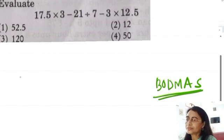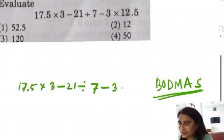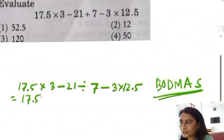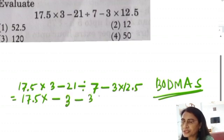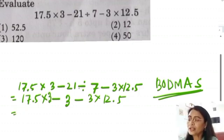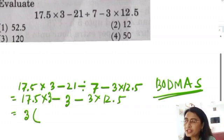Here I am writing the question. Division means 21 divided by 7. 7 times 3 is 21, minus 3 into 12.5. So here you see, all terms have 3. Here 3 into something, here 3 into 1, here 3 into something.